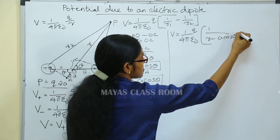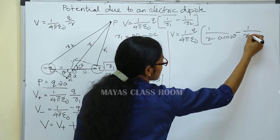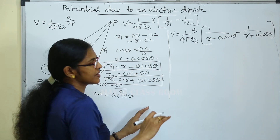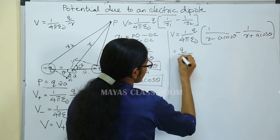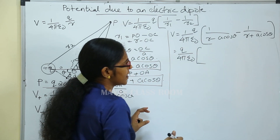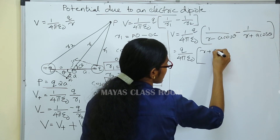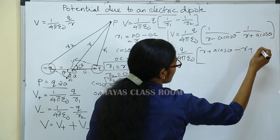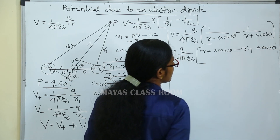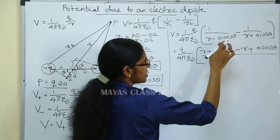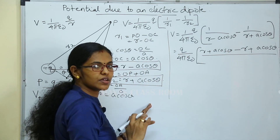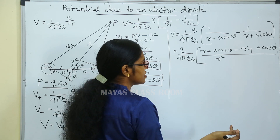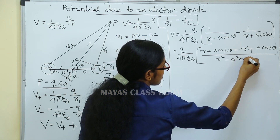Substituting, we get 1 divided by r minus a cos theta minus 1 divided by r plus a cos theta. This equals Q divided by 4 pi epsilon 0, multiplied by r plus a cos theta minus r minus a cos theta, all divided by r minus a cos theta into r plus a cos theta. The denominator is a minus b into a plus b, which equals r squared minus a squared cos squared theta.